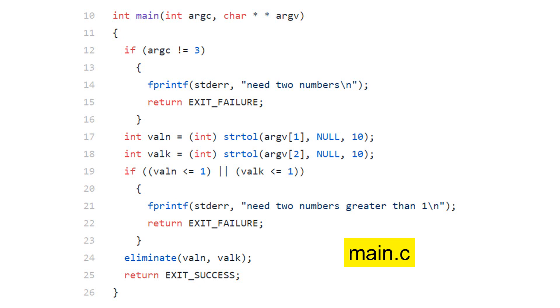If either value is 1 or less, the program stops because this program needs both n and k to be greater than 1. At line 24, the program calls the eliminate function.